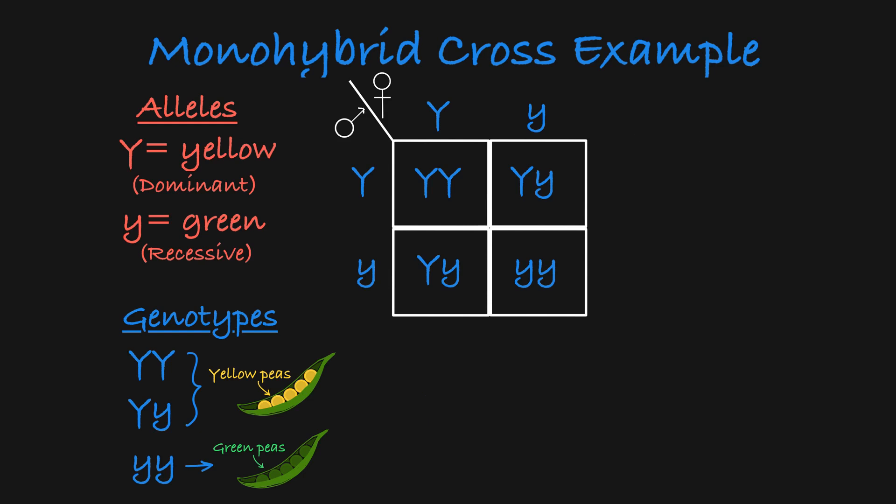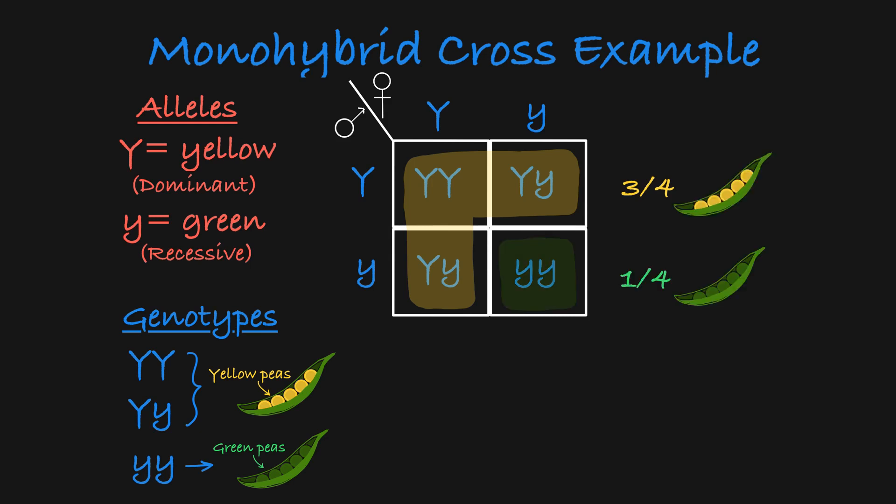When you look solely at phenotype, you can see that three quarters of the offspring will have yellow peas, and one quarter of the offspring will have green peas.